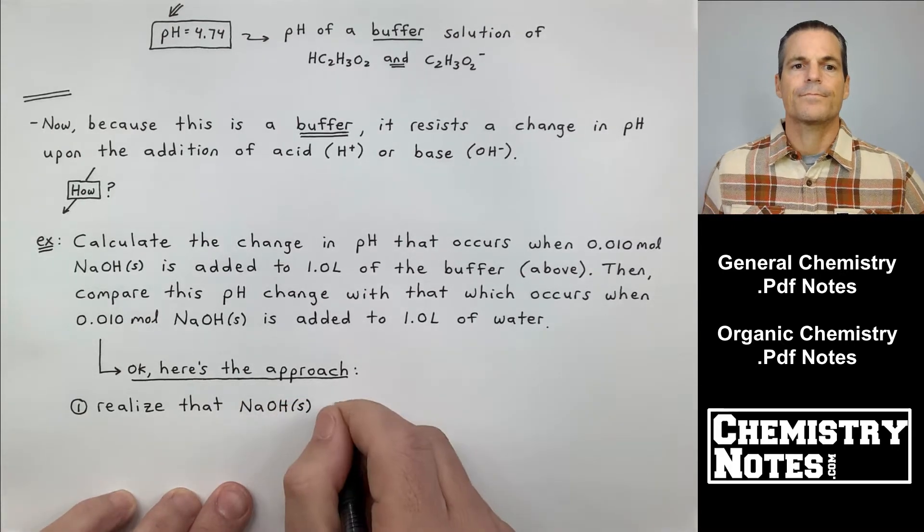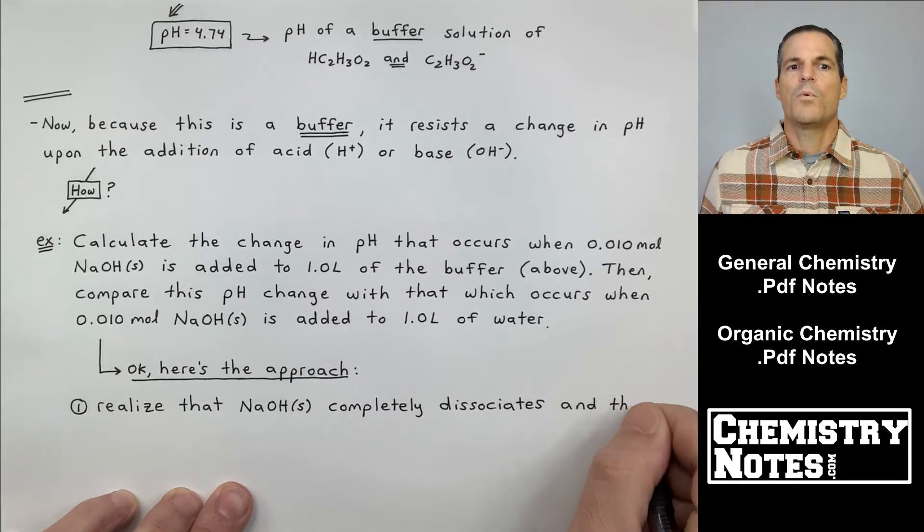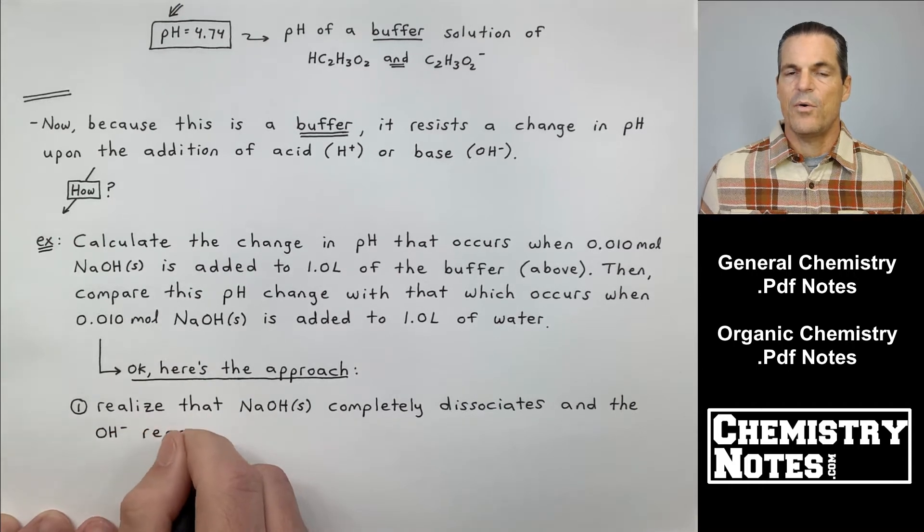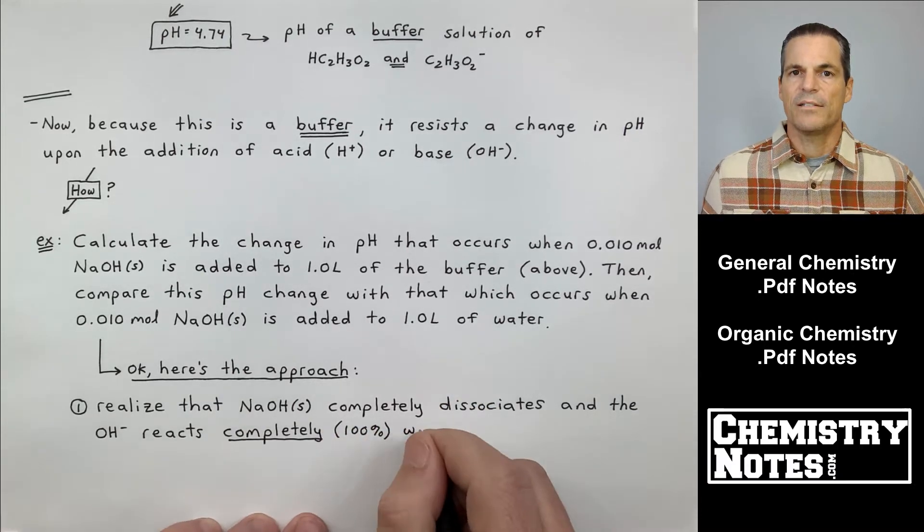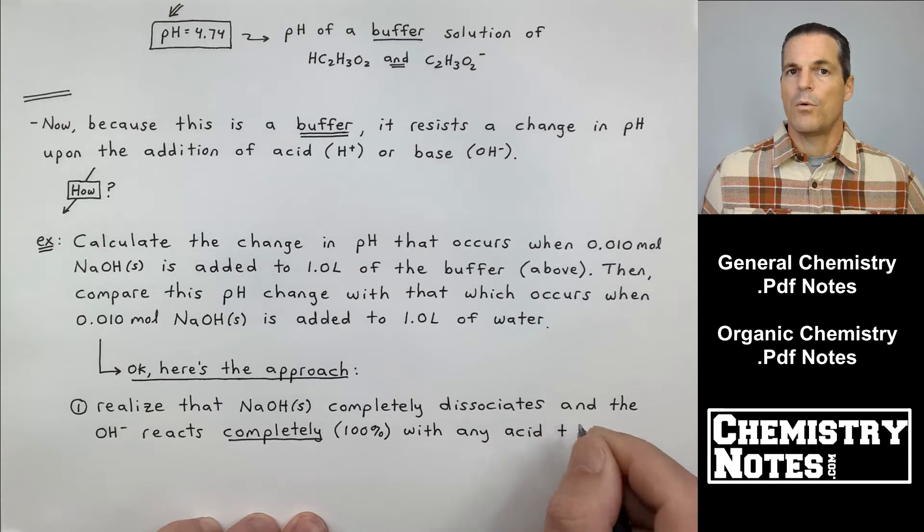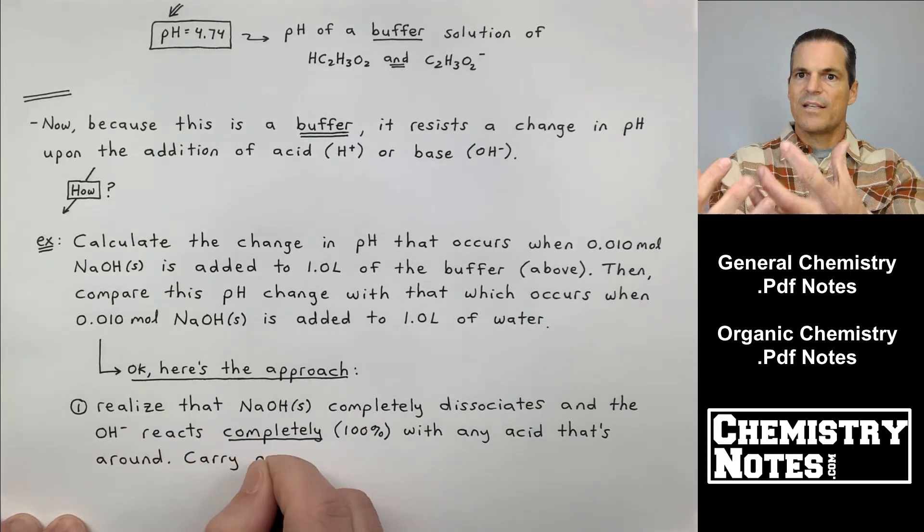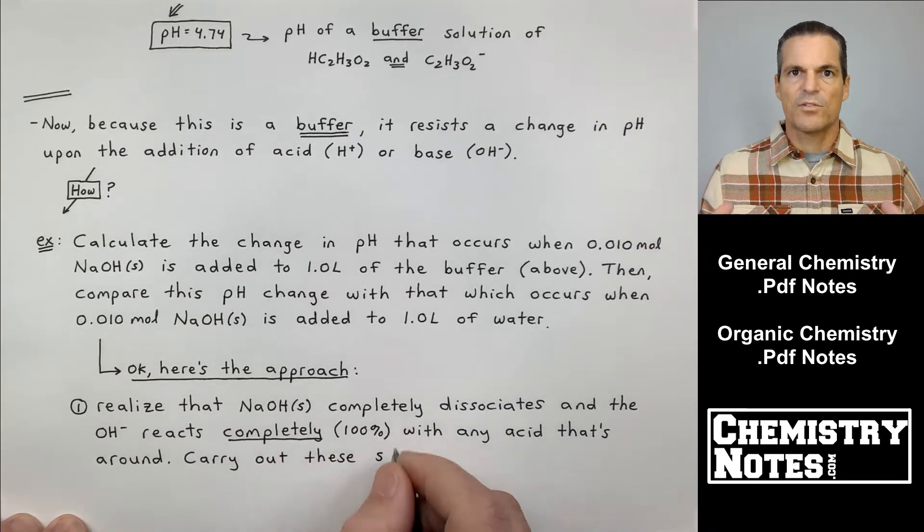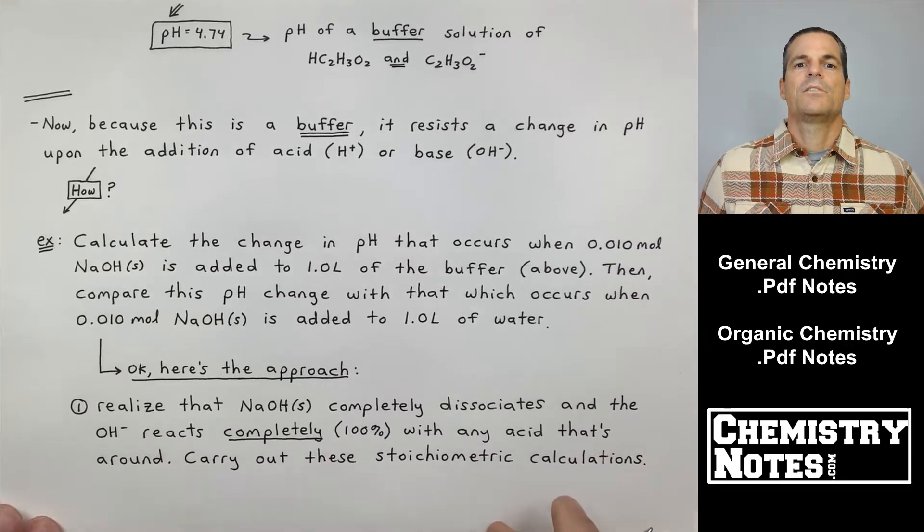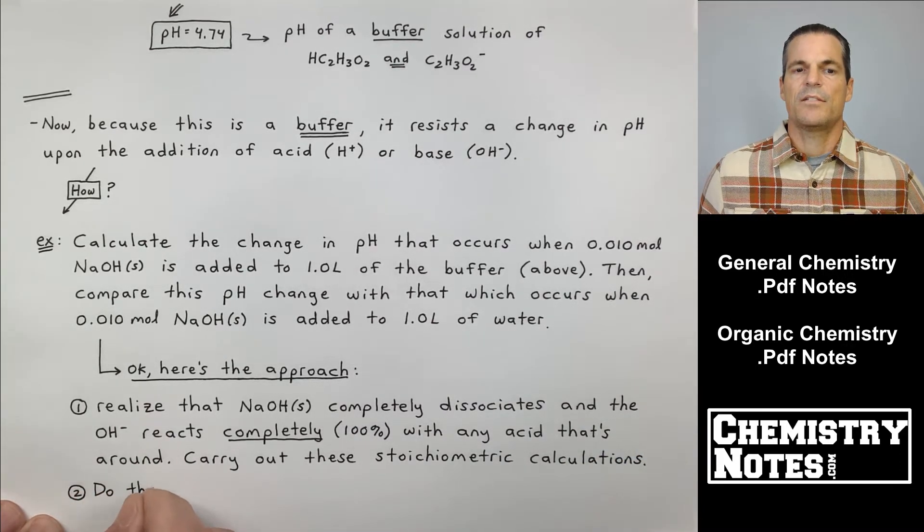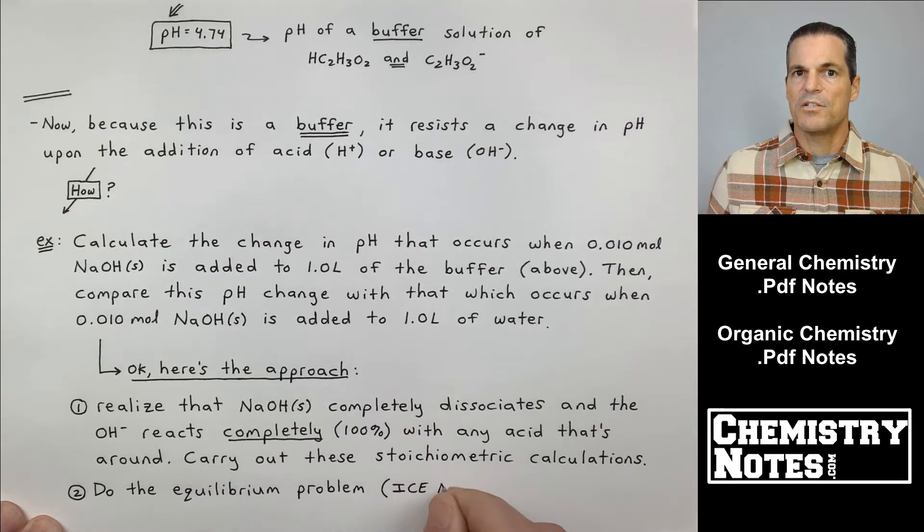Only number one is new. Number two is just, now that number one is done, do the equilibrium expression, do the ice table. So number one says, realize that NaOH solid, very strong base, completely dissociates, and the OH- is going to react completely or 100% with any acid that's around. OH- is a really strong base. He's extremely good at doing what? Accepting H+. If there's any source of H+ around, like a weak acid, OH will grab it all and turn himself into water. So realize that NaOH completely dissociates, and the OH- reacts completely with any acid that's around. Carry out those stoichiometric calculations, and we're going to do that.